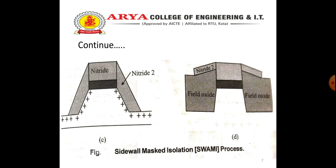Finally, the nitride and pad oxides are removed. The SWAMI process can produce thick field oxides with minimum encroachment, but retains the dopant diffusion problems of all LOCOS-based modules. This is all about the LOCOS method.